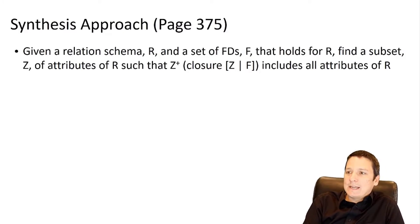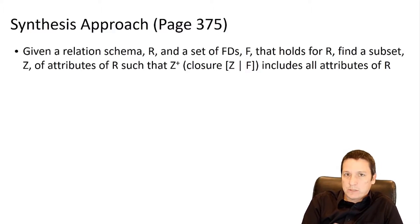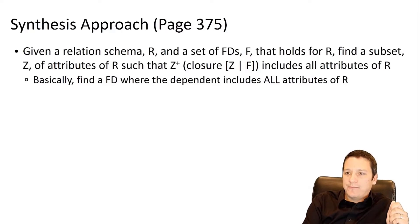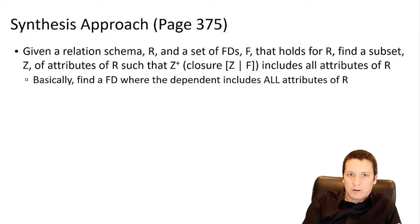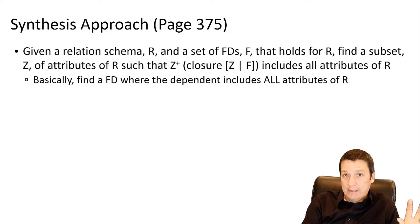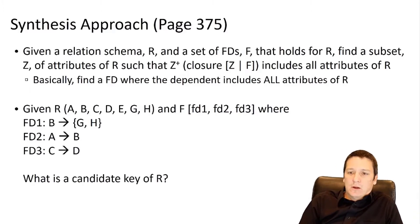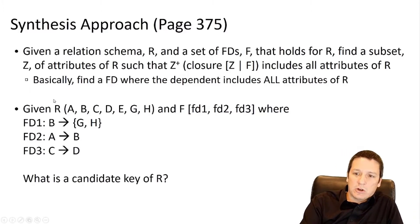Given a relation schema R and a set of functional dependencies F for this relation R, we are going to find a subset of attributes such that the closure of this set under F includes all attributes of R. Basically, we want to find a set of attributes that will be the determinant and whose dependent includes every attribute in our relation.